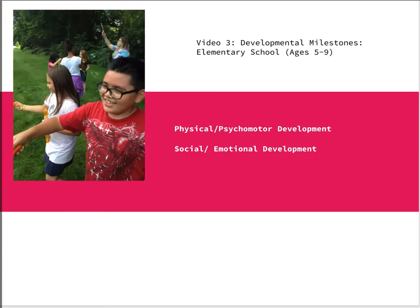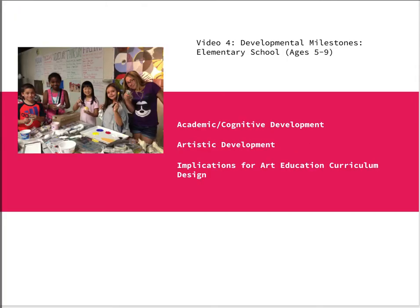Video three will look at the same developmental milestones, but now for early elementary age children. Video four, still looking at elementary school ages — ages five to nine — focuses on academic and artistic development and how all of this developmental knowledge impacts how we create curriculum.